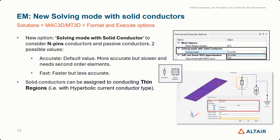We can now consider the Magnetica C solution 3D and Magnetostatic 3D solution. The M-pin solid conductor component is also available in the SCAC solution with two different computation modes: accurate and fast. With the accurate mode, second-order elements are needed, while the fast mode evaluates the current more quickly. This allows consideration of thin conducting regions in 3D to speed up solving, such as thin regions with hyper-polite current along the depth. You can see images of the M-pin conductors and the thin region as a surface region in 3D.